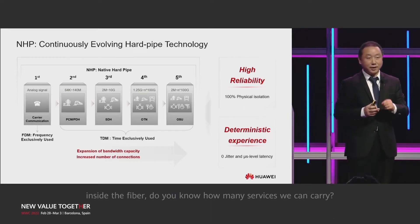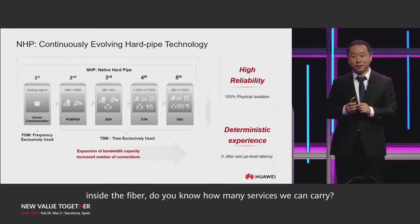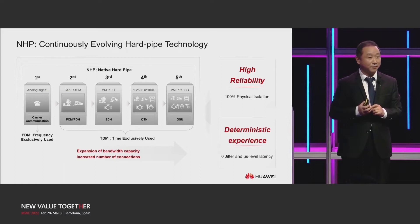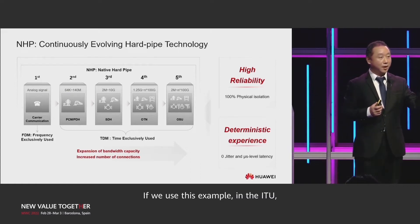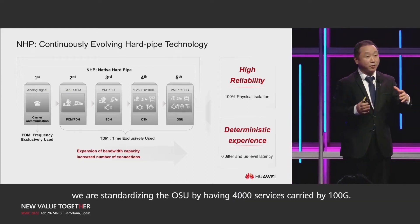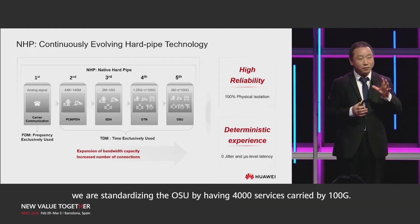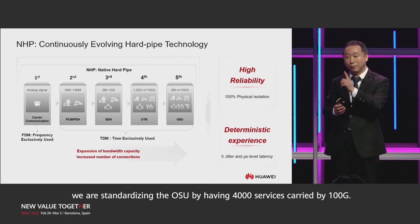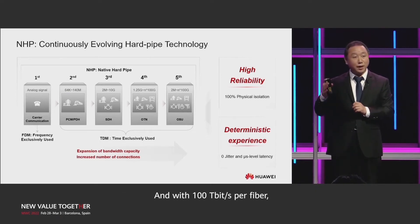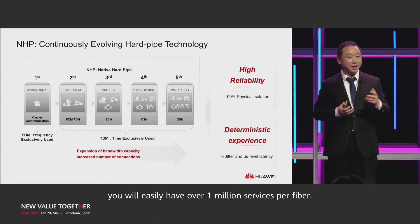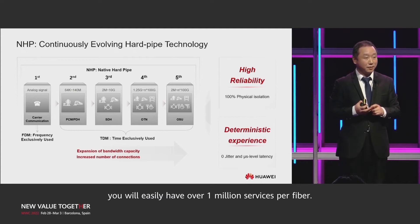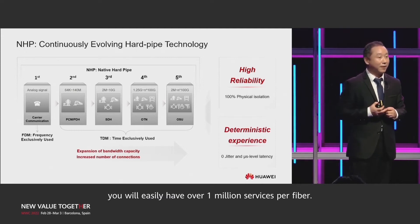So roughly speaking, inside the fiber, how many services can we carry? Using the ITU example, we are standardizing OSU by having 4,000 services carried by 100G. And with 100 terabits per second per fiber, you will easily have over 1 million services per fiber.